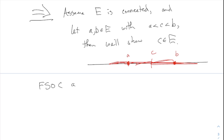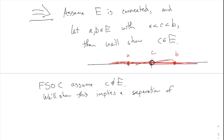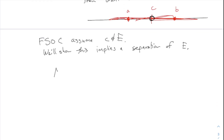We imagine c is like a hole in the set — there's a point c but it's not part of E. Then we derive a contradiction by showing this implies a separation of E. Can you split E into two parts using the fact that c in the middle is not actually part of E?